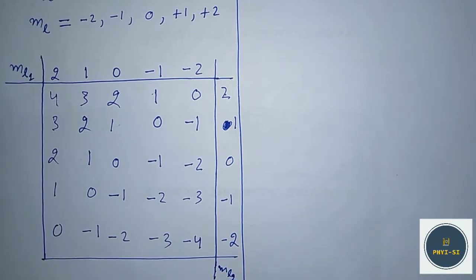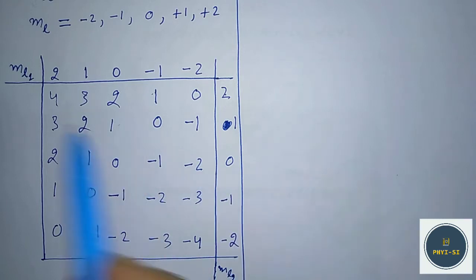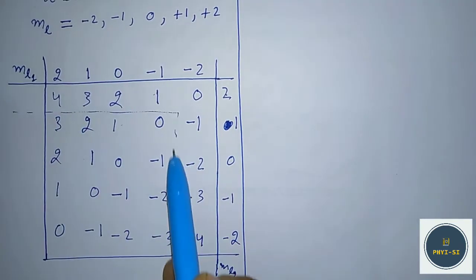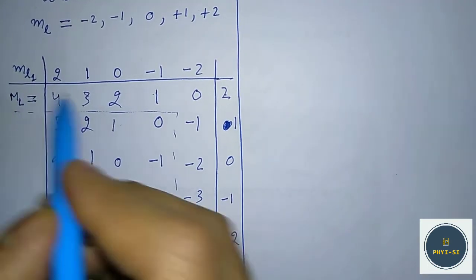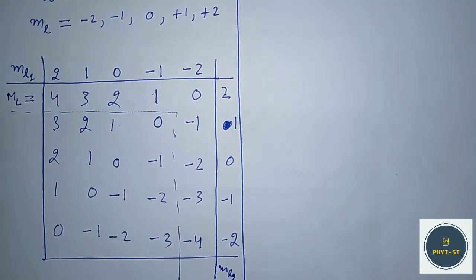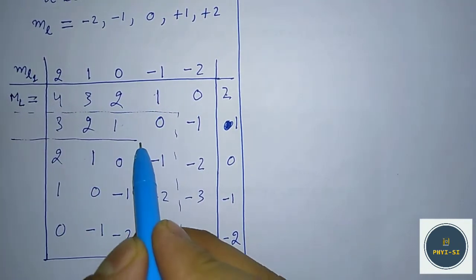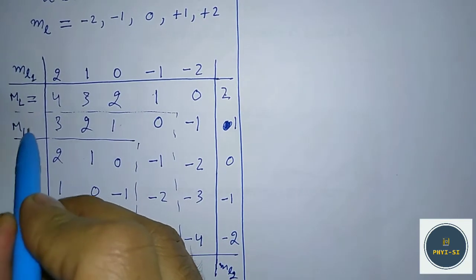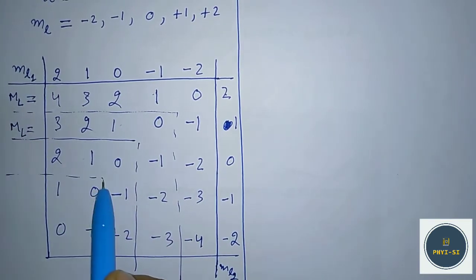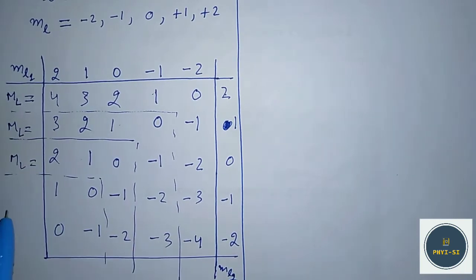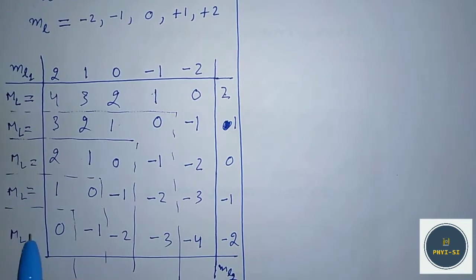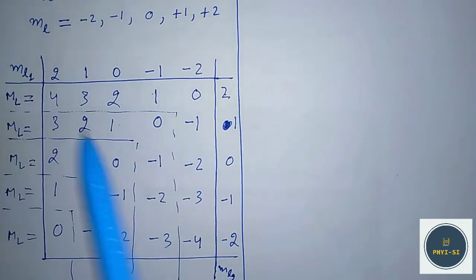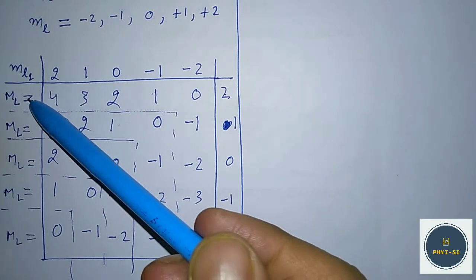These values are all capital ML values. We can see we have five sets of these ML values — first, second, third, fourth, and fifth.